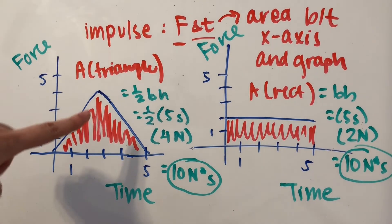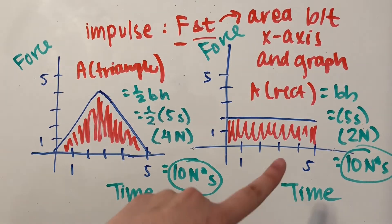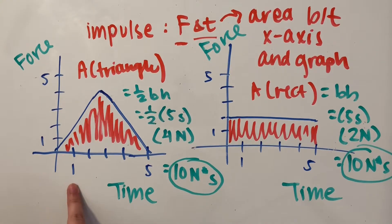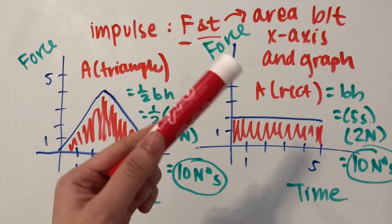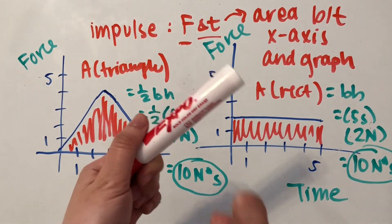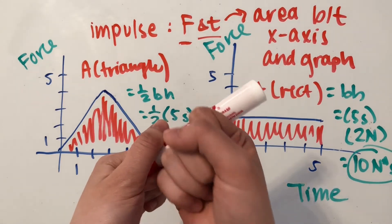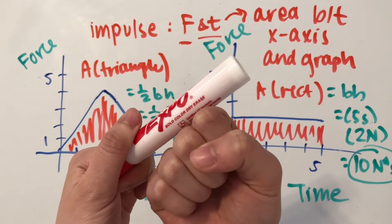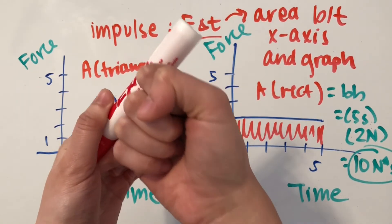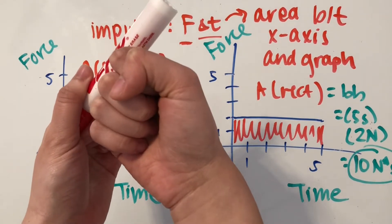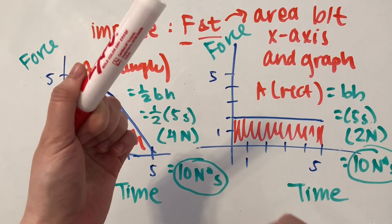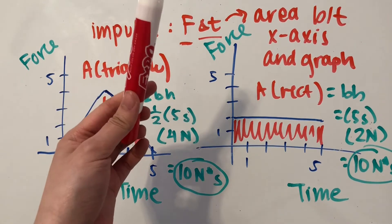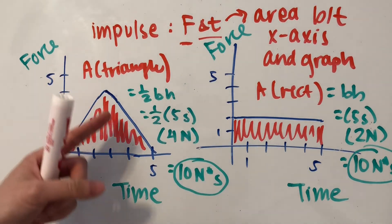But this first graph is a lot more realistic than the second one, and so you're going to see this first graph probably a lot more, because if you're going to exert a force on something, like right now I'll pretend to punch this marker, at the beginning of the contact, the force isn't going to be as great. And then a few seconds in, you're going to be exerting your full force on it, and then when you take your hand back away from this marker, then the force will gradually go back down to zero.